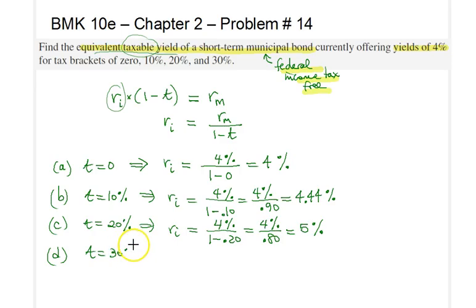And finally, in part D, if you know that the tax bracket of an investor is 30%, the investment he should get from a taxable security, the rate of return that investor should get on a taxable security, must be 4% divided by 0.70, and the result is 5.71%.